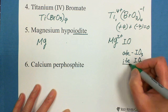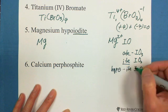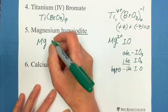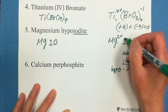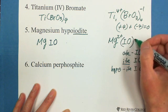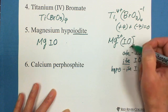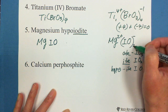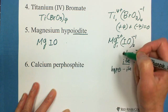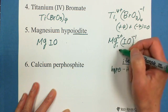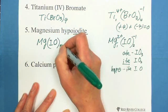Hypoiodate. So this is IO. Because this is 2 positive charge, the hypoiodate is negative 1 charge. So we need 2 hypoiodate ions, total will be negative 2 charge. This is 1 magnesium, 2 positive charge. That's why this formula is Mg(IO)2.